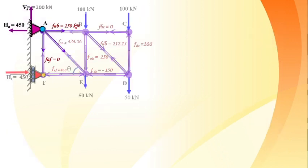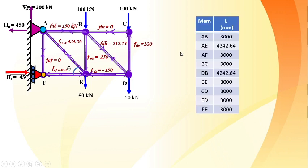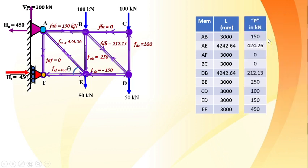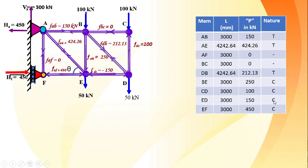The final step is to compile all data — member forces with their magnitudes and nature (tensile or compressive) — into a complete table alongside the original problem figure showing external reactions and internal member forces. This concludes the thorough analysis by the method of joints. Thank you for watching.